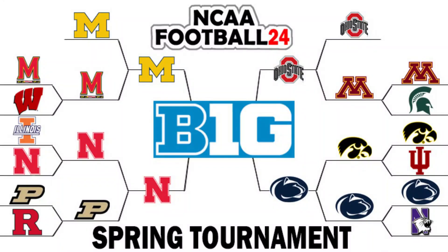We've got our final four set. It'll be Michigan versus Nebraska, and then Ohio State versus Penn State. Both of those games will take place in real life this season, but we'll see what happens here with our spring rosters. You've got to think Ohio State and Michigan are going to be the favorites, and potentially we see those two teams in the championship. Michigan hosting Nebraska, Ohio State hosting Penn State.